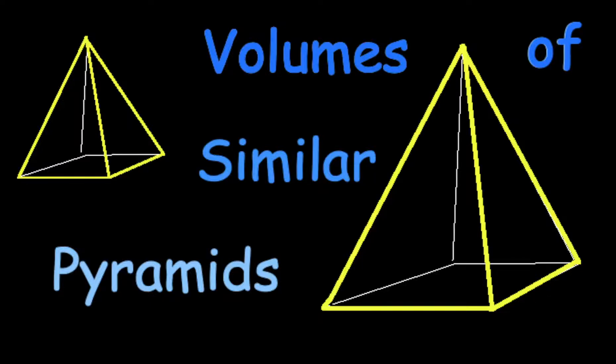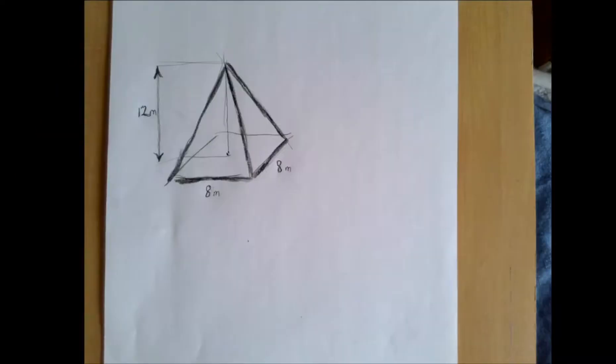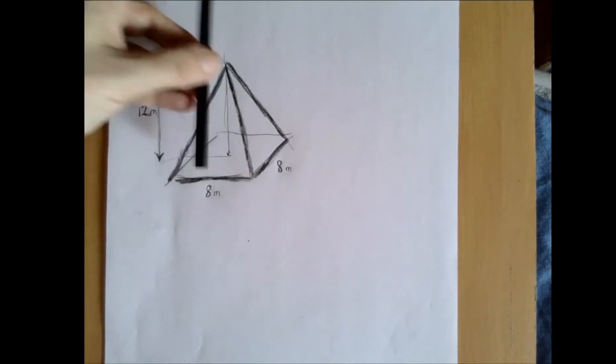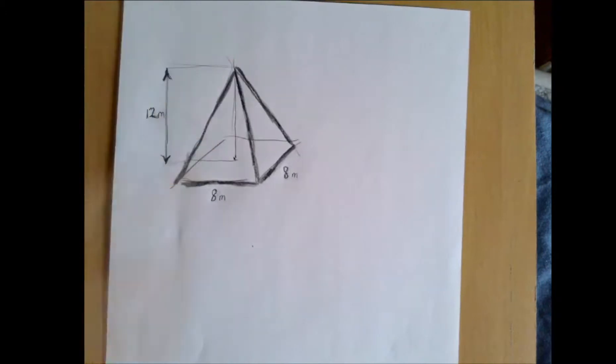We are given a square based pyramid and we are asked to find the volume of this pyramid. So it is square based, so the base is a square with sides 8 meters each and also given is the height which is 12 meters.